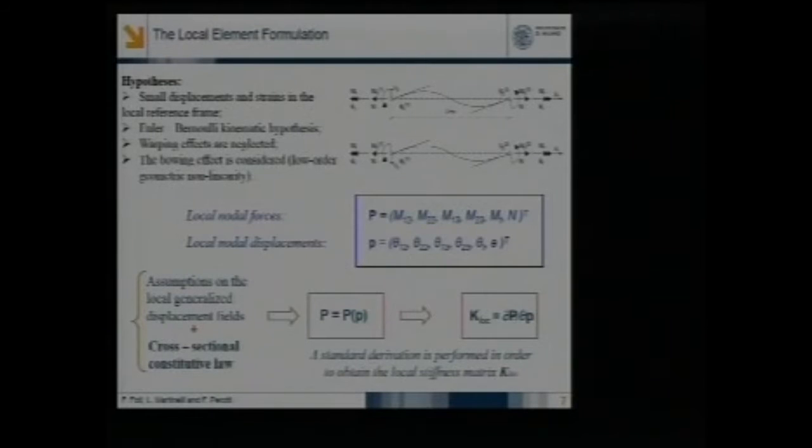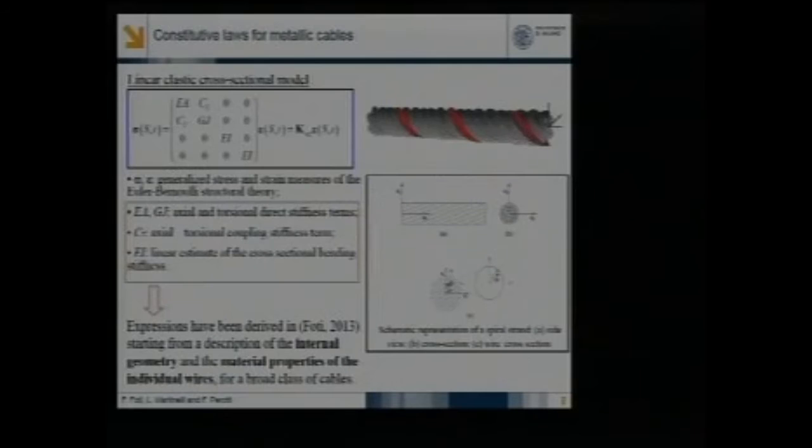At the local level, in the corrotated frame, we assume a standard Euler-Bernoulli structural theory. We neglect shear and warping effects, but we can account for some lower-order geometric non-linearity such as bowing. Then by applying a standard finite element approach with shape functions on displacements and a suitable cross-sectional law, we can evaluate nodal forces in the corrotated frame and derive a local stiffness matrix.